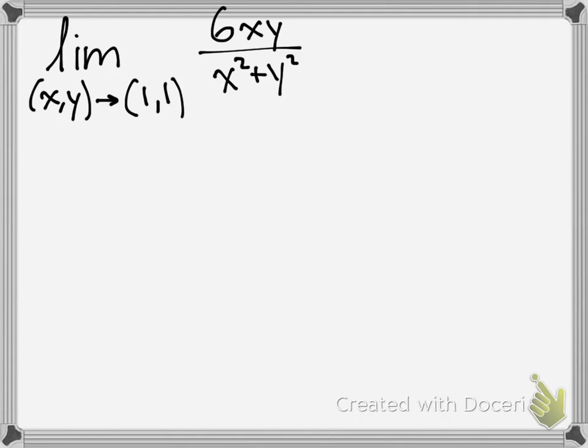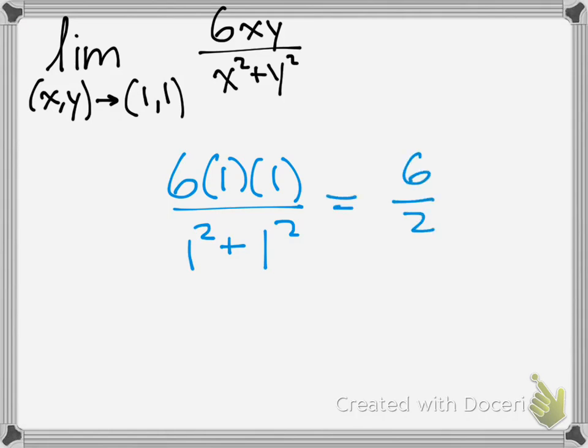So let's just do the plug and chug method. So 6 times 1 times 1 over 1 squared plus 1 squared, one second. So that means you need to get 6 over 2, which is 3. So the limit is 3 when you approach from the x and y direction at 1.